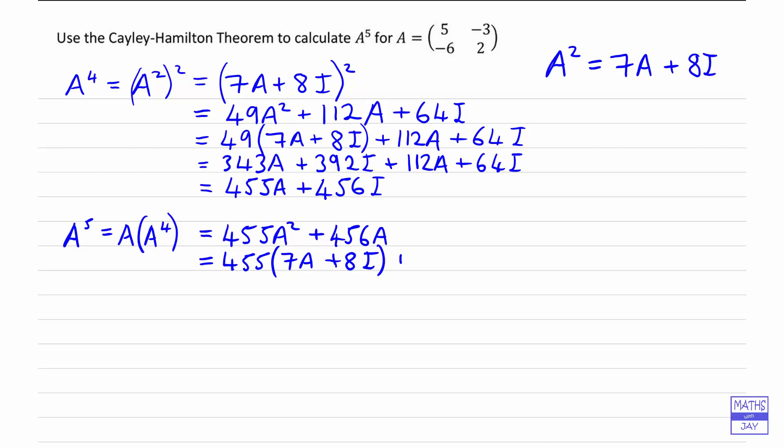So we're nearly there. You can see that all we've got left is something times A and something times I. So the numbers just get a bit bigger. We've got 3,185A, 3,640I, and we've still got the 456A at the end there. And then combining those, we get 3,641A and 3,640I.